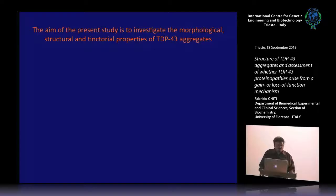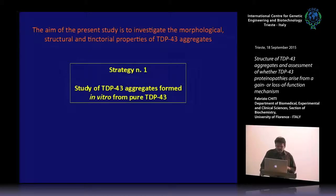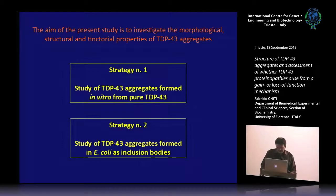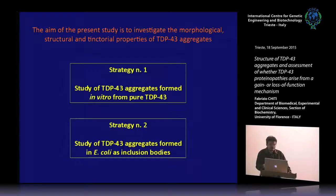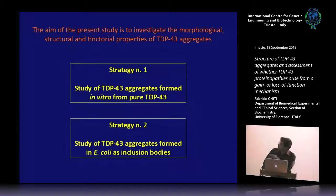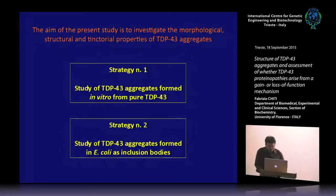The aim of our study was to investigate the morphological, structural, and tinctorial properties of TDP43 aggregates. To do so we used two strategies: we studied TDP43 aggregates formed in vitro from pure TDP43, and also aggregates formed in E. coli as inclusion bodies following expression of TDP43. I will start by showing results from the in vitro strategy and then proceed to show results from the inclusion body strategy.